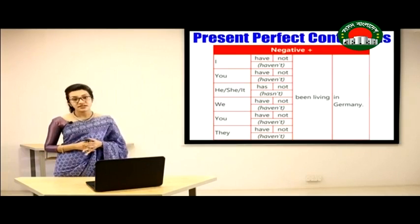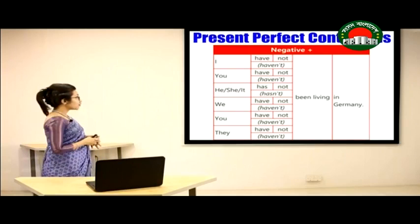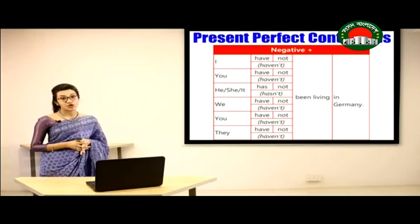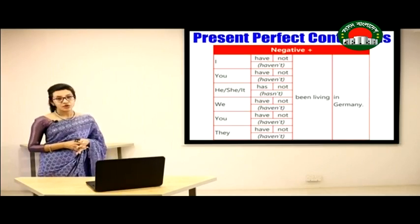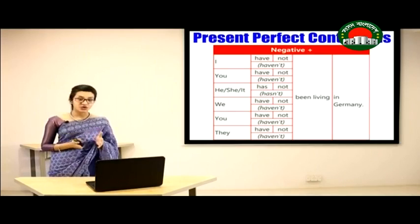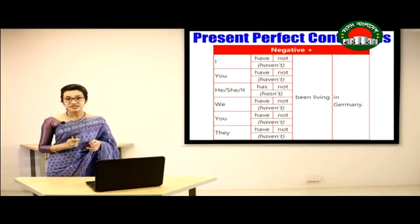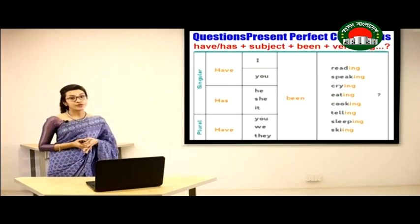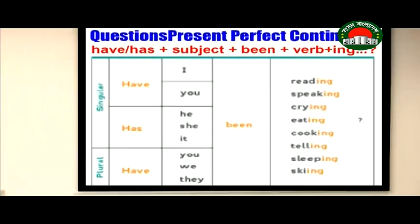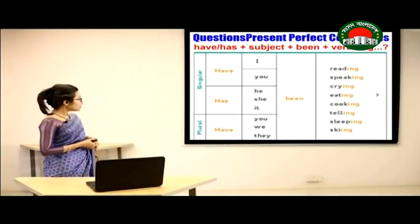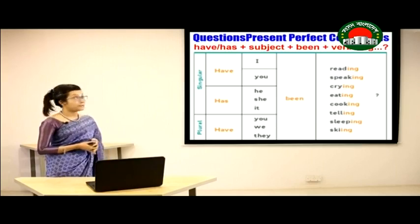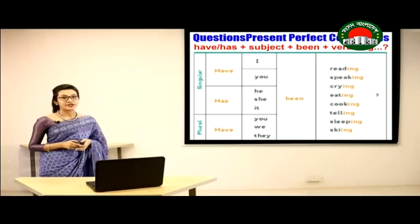To make a negative sentence using Present Perfect Continuous Tense, we simply add 'not' after have or has. For example: 'We have not been living in Germany,' 'You have not been living in Germany.' For questions, we place have or has at the beginning of the sentence. For example: 'Has she been sleeping?' and 'Have you been speaking?' — have/has comes first, then the subject, then 'been,' then verb+ing, and don't forget the question mark.